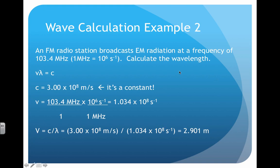For another example, let's calculate the wavelength instead. Here we're given 103.4 megahertz — a radio broadcasting station — and we need to calculate the wavelength. Again, we use our wave equation; c is constant. We convert megahertz into hertz — remember, mega means a million, so 1 megahertz equals 10 to the 6th seconds to the minus one. We then solve for wavelength by dividing the speed of light by the frequency to get our wavelength.